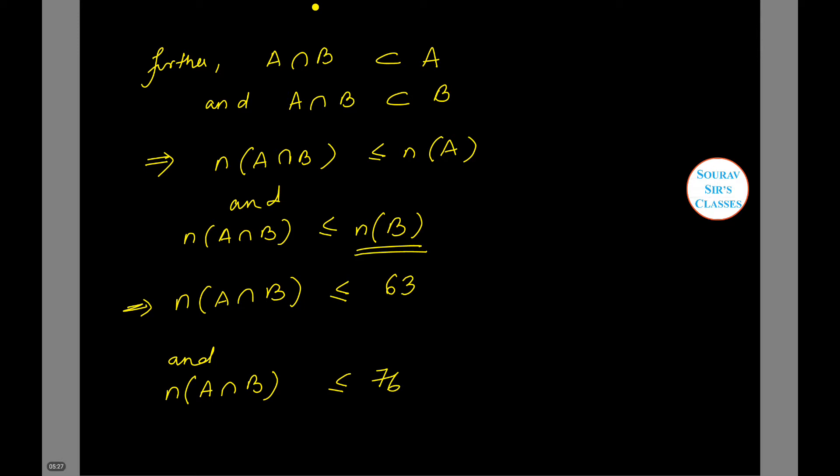So initially we got that A∩B should be greater than or equal to 39, and here we have 63. So I am considering this. If I consider these two, combining these two we can say that the range of A∩B will be this. And denoting this as x, the range of x will lie between these two numbers.